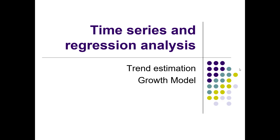Let's talk about time series and regression analysis, also known as trend estimation and growth models. Trend estimation is nothing more complicated than putting time as one of our X variables. When we're talking about autocorrelation — where the errors are related to each other — that becomes a problem with these time series type models. This is not a pure time series model; it's simply putting time as one of the independent variables and doing a regular regression.